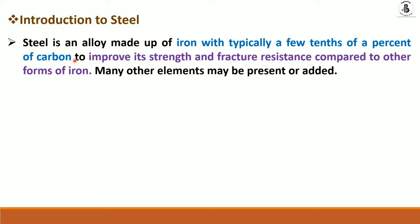In this video I would like to explain the classification of steels. The presence of carbon improves strength and fracture resistance compared to other forms of iron. Many other elements may also be present or added as required — such as chromium, nickel, molybdenum, silicon, and manganese — depending upon requirements.